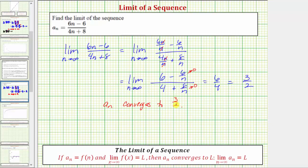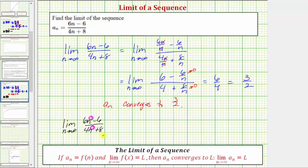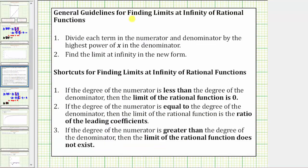Before we look at this graphically, let's also show the shortcut for determining the original limit. The shortcut involves looking at the degree of the numerator and denominator. Because we have n to the first in the numerator and n to the first in the denominator, the degree of the numerator is one and the degree of the denominator is also one. Because the degree of the numerator and denominator are equal, our limit is case two: if the degree of the numerator equals the degree of the denominator, the limit of the rational function equals the ratio of leading coefficients.